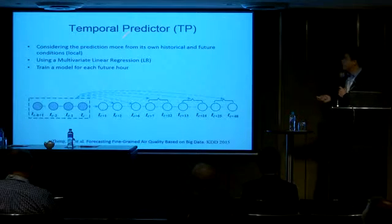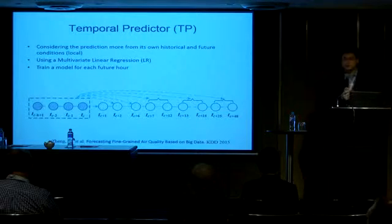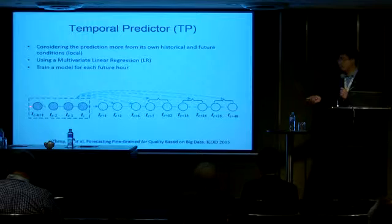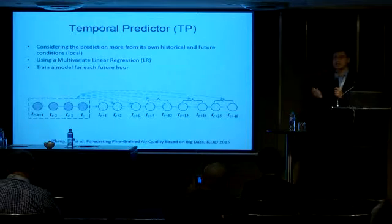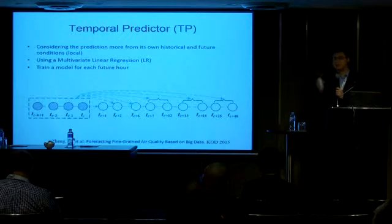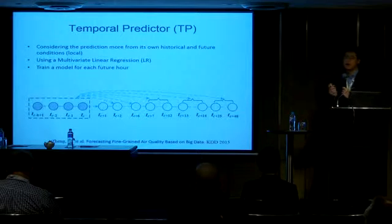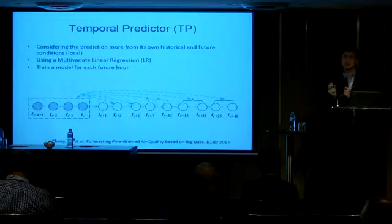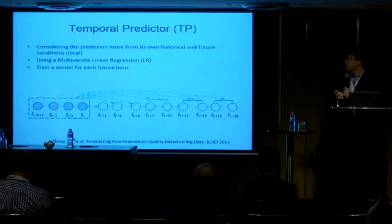This is how the temporal predictor works. It's based on linear regression, taking into account the data of the station itself. We put the air quality data and meteorological data of the past few hours as input into a regression model to predict its future air quality. We train different models for different future time hours.